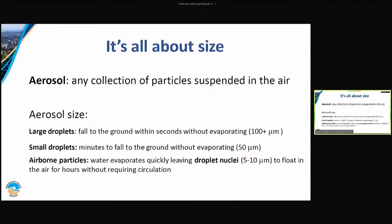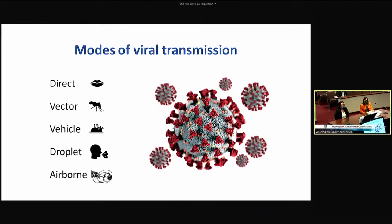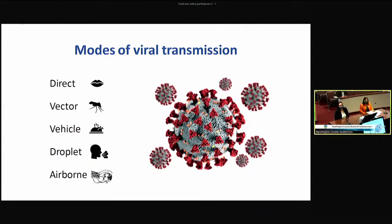A question on that — when you say vehicle, there's been some commentary that the virus can live on surfaces for periods of time, but you described vehicle as food-related. So a vehicle is anything that is not alive that can transmit disease — it could be anything, like a microphone: I touch it and then you touch it. Absolutely, but not a living creature or insect.